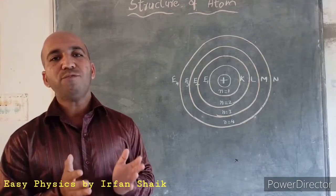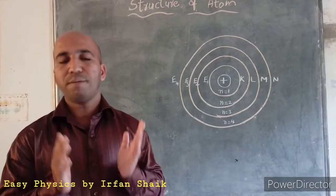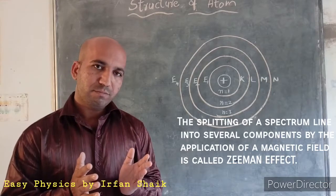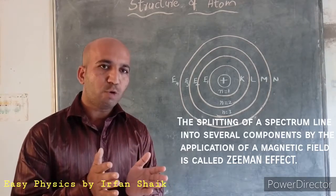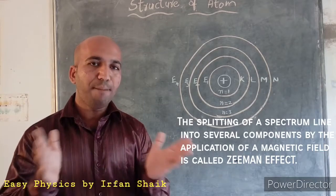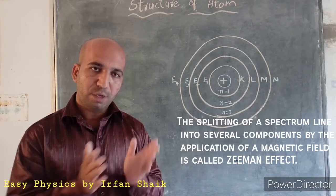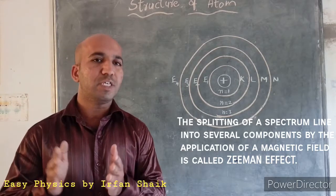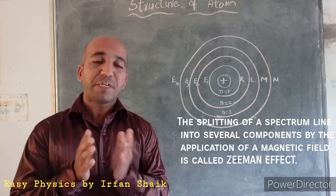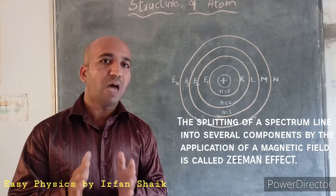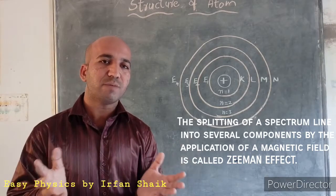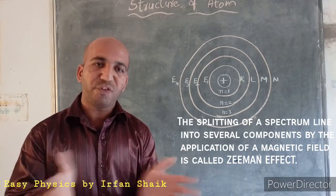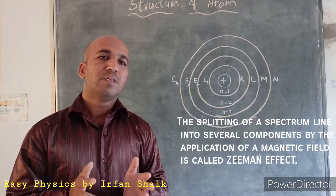There are two more important phenomena to know. When spectral lines split into many lines in the presence of a very powerful magnetic field, this phenomenon is called the Zeeman effect.